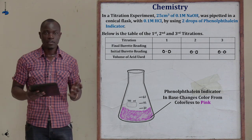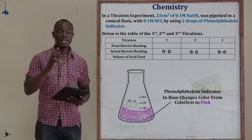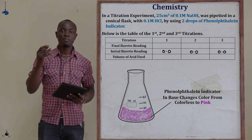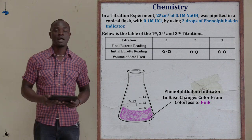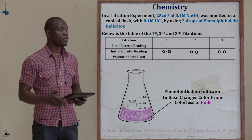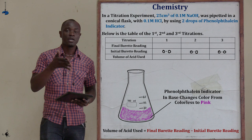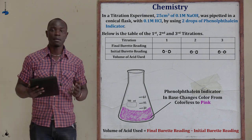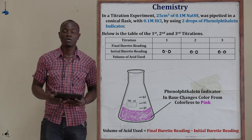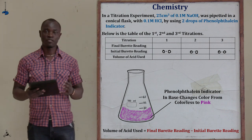We have the final burette reading, the initial burette reading, and the volume used. The volume used in the experiment is calculated by: final burette reading minus the initial burette reading equals the volume used in that specific experiment, whether it's titration one, two, or three.